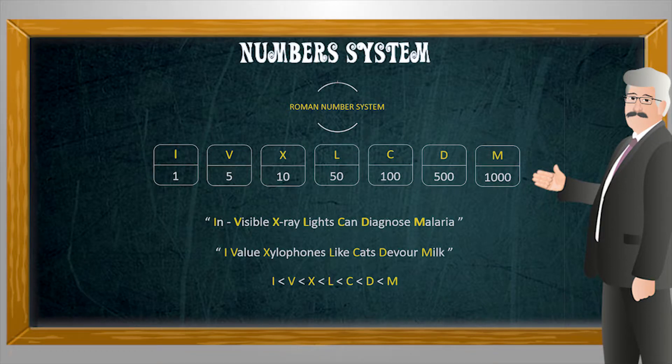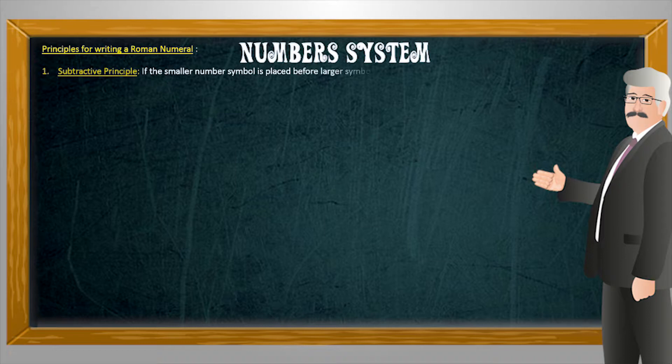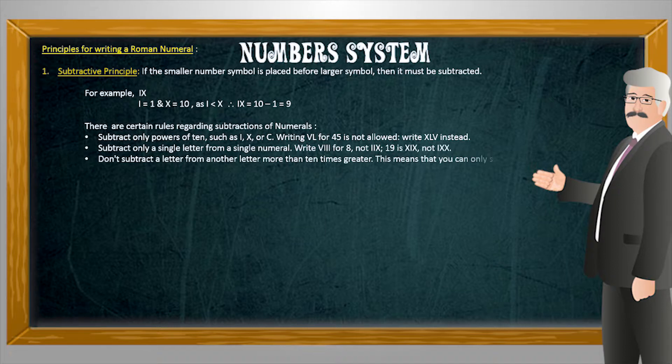Now let us look at the four main principles for writing any Roman numeral. First principle is the subtractive principle. It states that if the smaller number symbol is placed before larger symbol then it must be subtracted. For example, in case of number nine, nine is represented by symbols IX. Here value of I is 1 and value of X is 10.